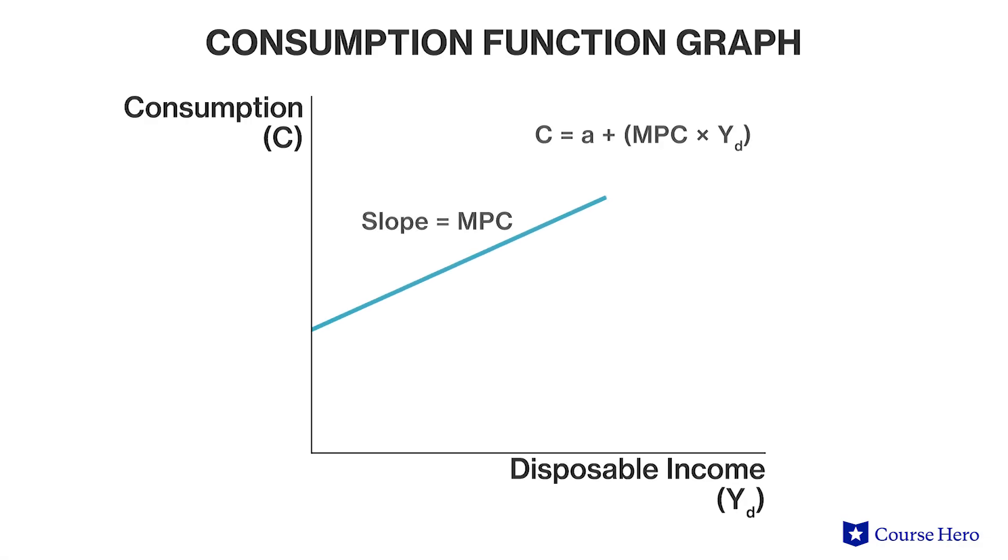MPC is the slope of the consumption function and A is the vertical intercept. The equation is a linear equation that expresses consumption as a function of income. MPC is a value between zero and one.